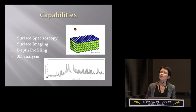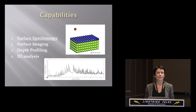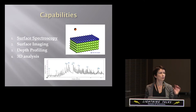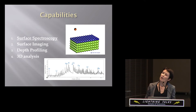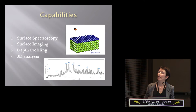Four major applications or directions where this machine produces data: the first is surface spectrometry. The ionized particles hit the surface, extracting everything in that very top layer. And on the bottom you see this mass spectrum that you get. Every single peak is a mass peak — every single peak is an element or compound contained in that particular surface.